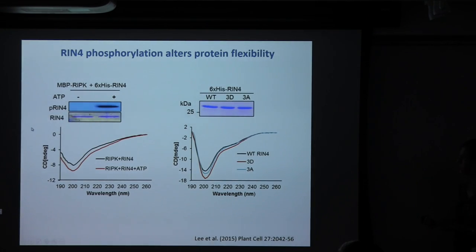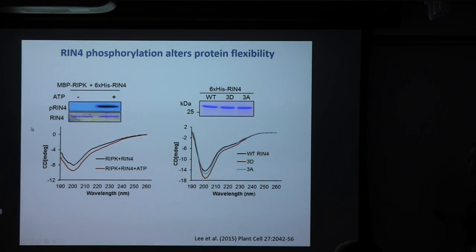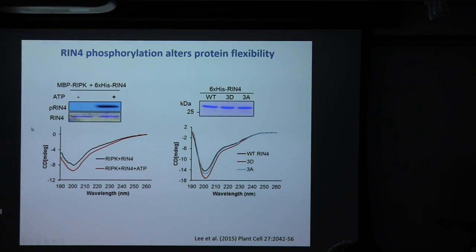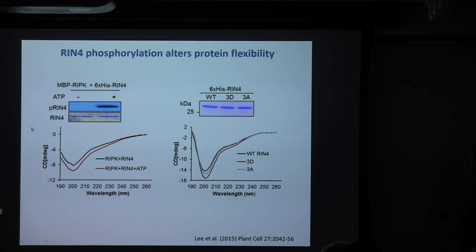RIN4 doesn't look like an enzyme, but it's conserved and has a high predicted level of intrinsic disorder. We tested whether phosphorylation might change secondary structure or flexibility. We didn't see any change in gross secondary structure. We phosphorylated RIN4 in the presence of RIPK using recombinant proteins, removed RIPK by centrifugation, and subjected phosphorylated versus unphosphorylated RIN4 to CD spectroscopy. Wild-type RIN4 shows a peak at low wavelength consistent with intrinsic disorder or random coil. Phosphorylated RIN4 shows stronger negative ellipticity, indicating it's a more flexible protein — similar results were seen with a phosphomimetic mutant.